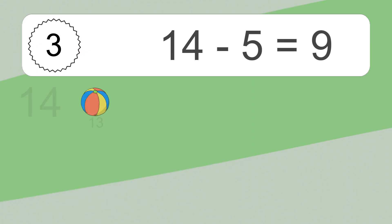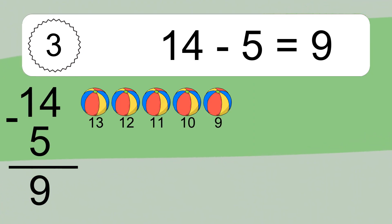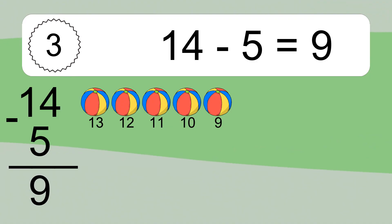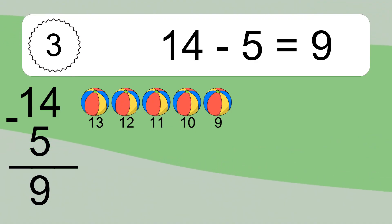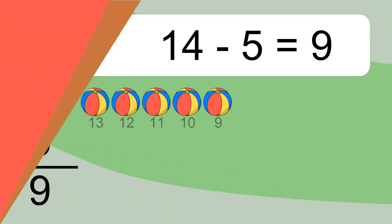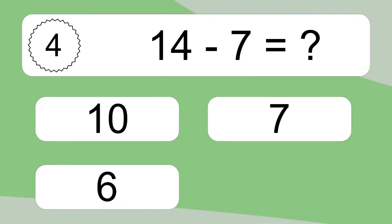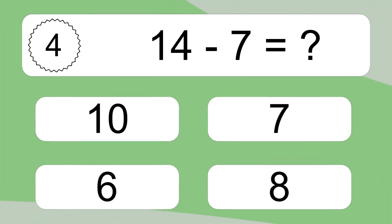14 minus 5 equals 9. Let's count it: 13, 12, 11, 10, 9. 14 minus 7 equals what?